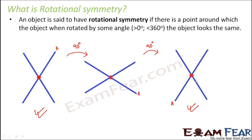Can we say this object has rotational symmetry? Yes, because between 0 degrees and 360 degrees, when rotated by some angle greater than 0 degrees and less than 360 degrees, it shows identical positions.